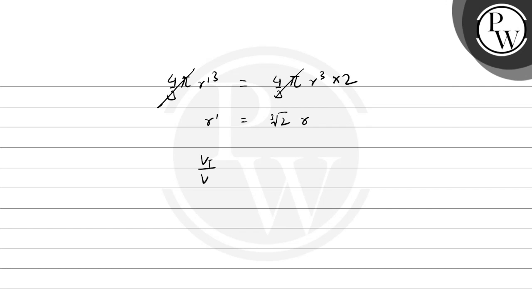vt divided by vt' equals r squared divided by (cube root of 2 times r) whole squared. So this equals r squared divided by cube root of 4 times r squared. r squared cancels.